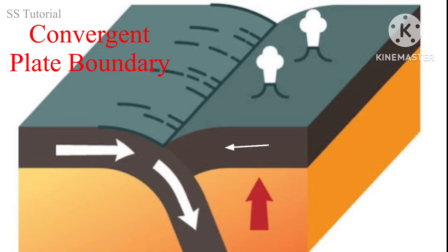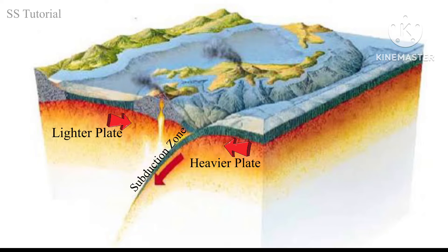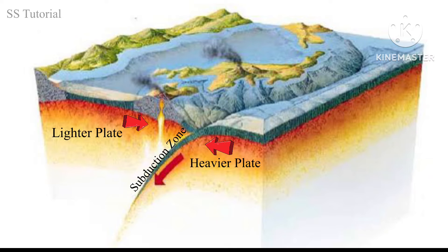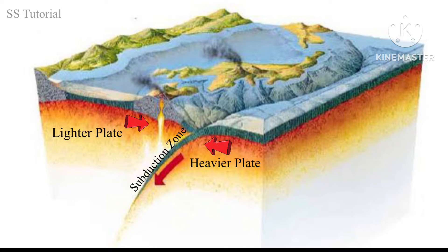Now let's know about convergent plate boundaries. When two plates move towards each other they collide, and the denser and heavier plate is subducted beneath the lighter plate. The zone where one plate is subducted beneath another is known as the subduction zone.